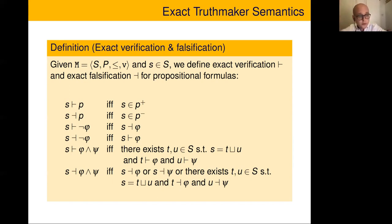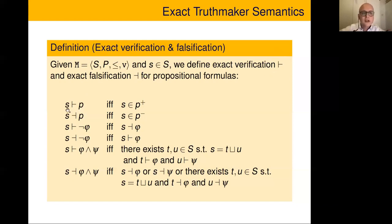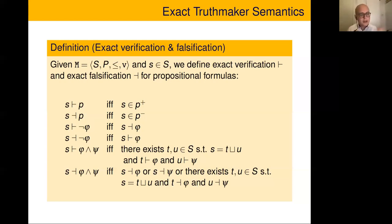Given a model and a state, the exact verification and falsification relations work as follows: an atom is verified by a state just in case the valuation says so; similarly for falsification. Negation flips truth and false making — not-phi is made true by a state just in case that state is a falsifier for phi. For conjunction, a state exactly verifies phi-and-psi just in case there exist two states whose fusion equals it, where the first exactly verifies phi and the second exactly verifies psi. The falsification condition for conjunctions is skipped for time.